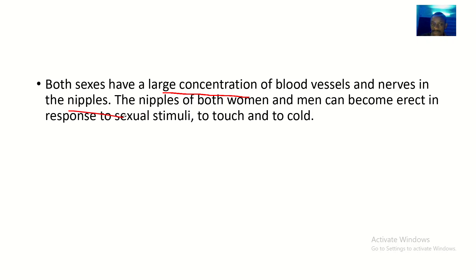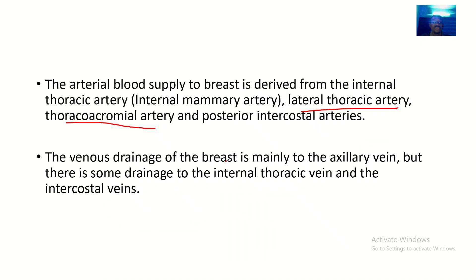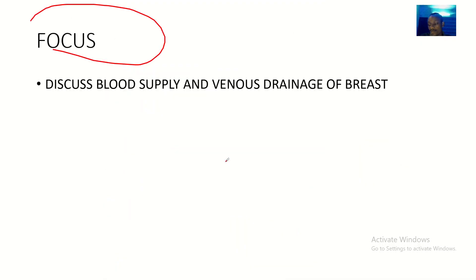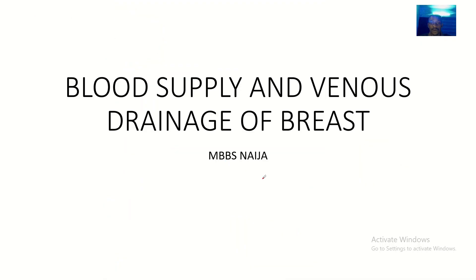Both sexes have a large concentration of blood vessels and nerves in the nipples. The nipples of both women and men can become erect in response to sexual stimuli, touch, and cold. That's basically the blood supply and the venous drainage of the human breast — hope you guys love this tutorial, see you in the next one!